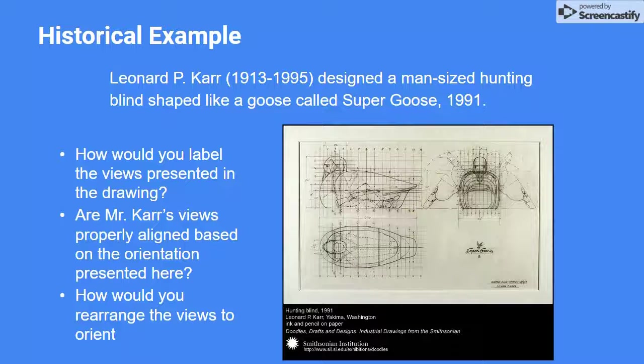This image shows a patent drawing of a hunting blind shaped like a duck. Notice where the front, top, and right side views are in this drawing. Many patent drawings don't use correct view orientation, and it can get very confusing when you see the top view of the duck shown on bottom where the bottom view should be.